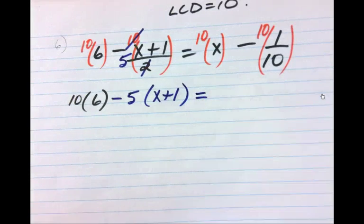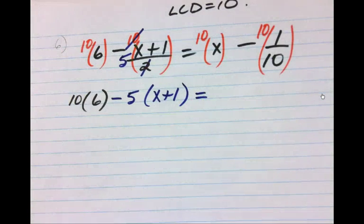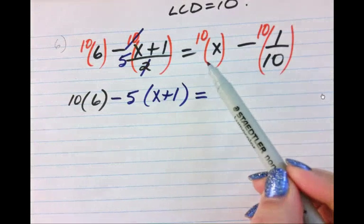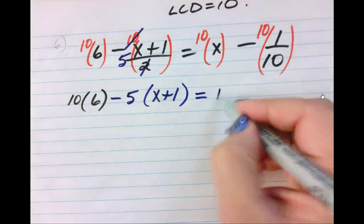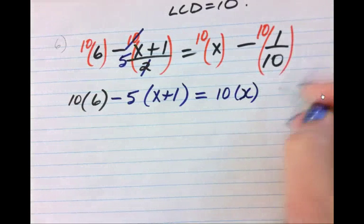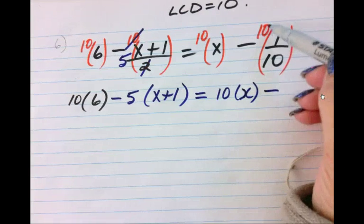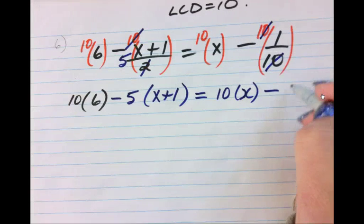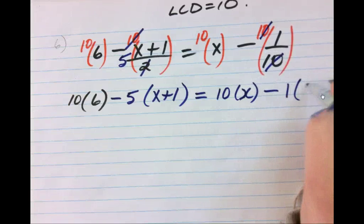So here do I have a fraction that I could expand? No, so I'm just going to write 10 times x. And then here do I have a fraction that I can reduce? I'm left with 1, so that's going to be 1 times 1.